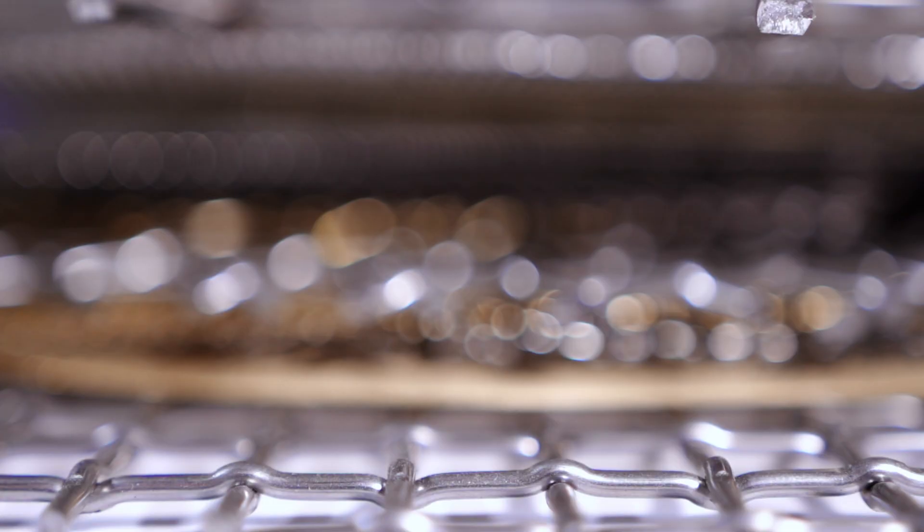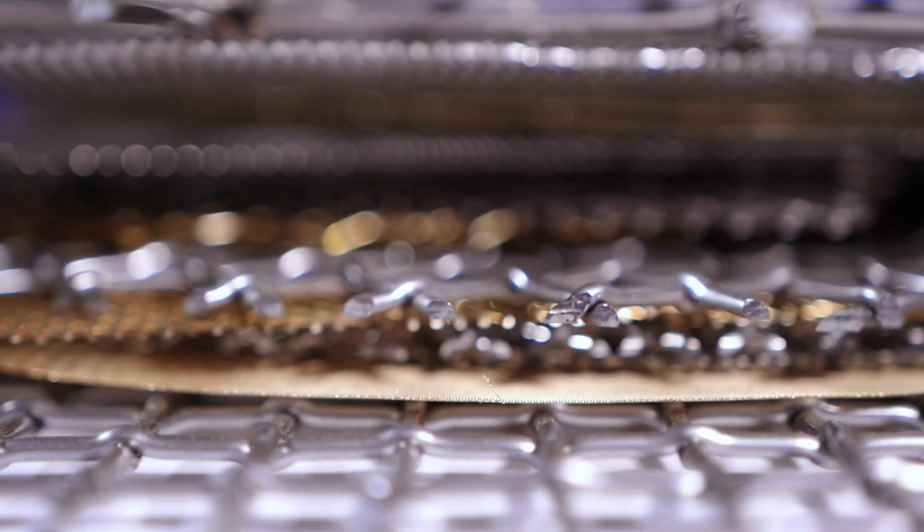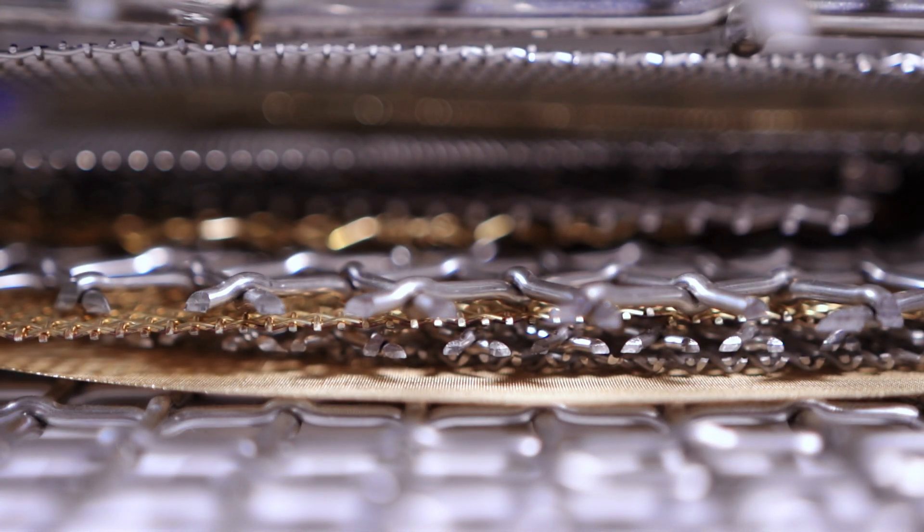Two methods can be used to find the wire diameter of a piece of woven wire mesh. The one that you use ultimately depends on the physical properties of the mesh. If the edges of the mesh have yet to be cut or the tips of the wires are exposed in any way, you can determine the wire diameter by using a micrometer screw to measure a single wire.